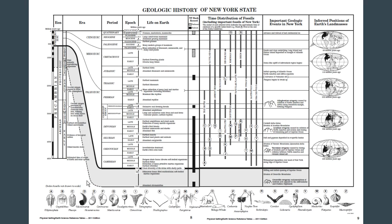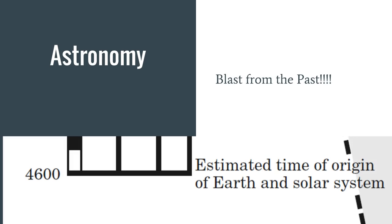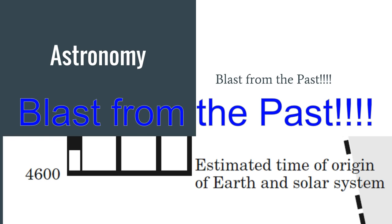What better way to start it off? With a little blast from the past. And that would be very difficult to see from that vantage point, but you can look on your reference table or through some digital wizardry we can make it a little bit bigger. You can see that the blast from the past is the estimated time of origin of Earth in the solar system — 4,600 million years ago.